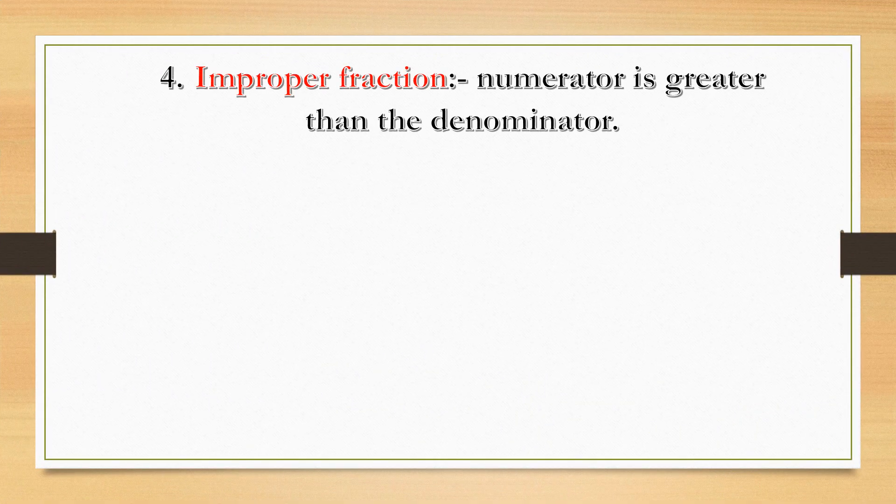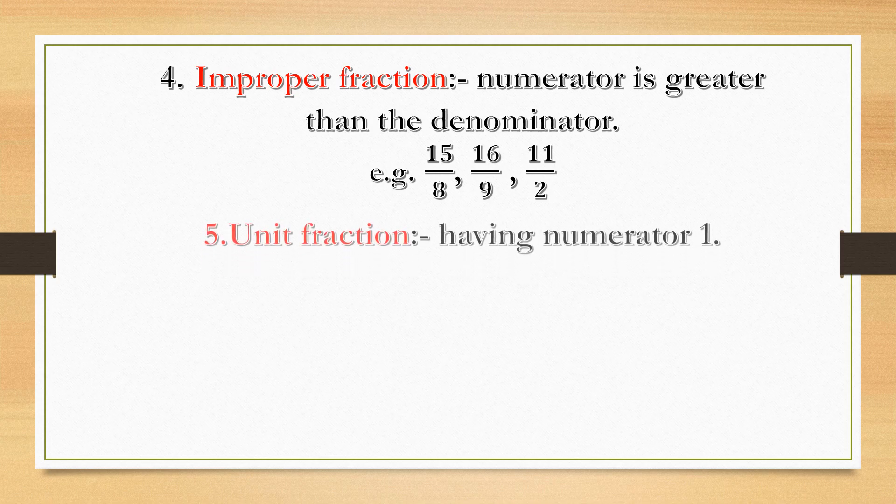The fourth type of fraction is improper fraction, where the numerator is greater than the denominator. For example, fifteen by eight — fifteen is the numerator and it is greater than the denominator eight. Other examples: sixteen by nine, eleven by two.